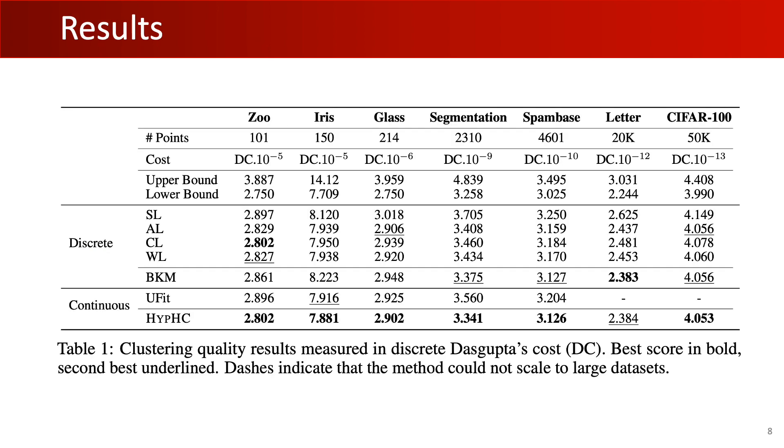We evaluate our method on standard clustering benchmarks and compare to linkage heuristics for hierarchical clustering. We find that the tree decoded by HypHC has a lower Dasgupta's cost on almost all datasets, suggesting that an optimization-based approach has the potential to yield better clustering quality.